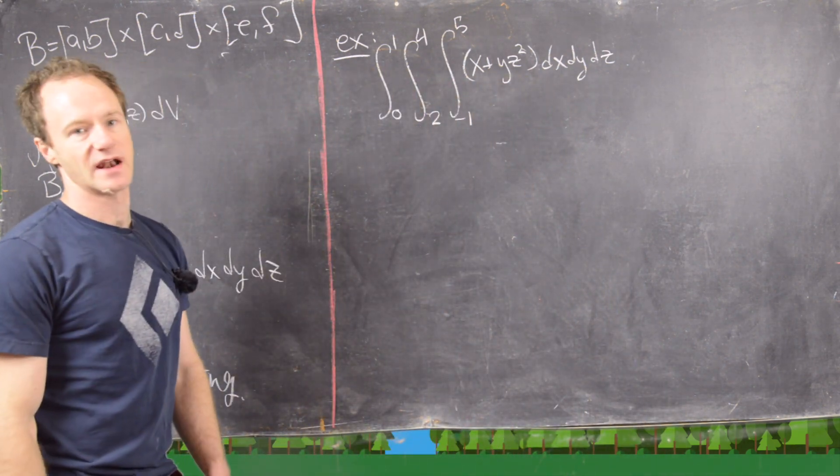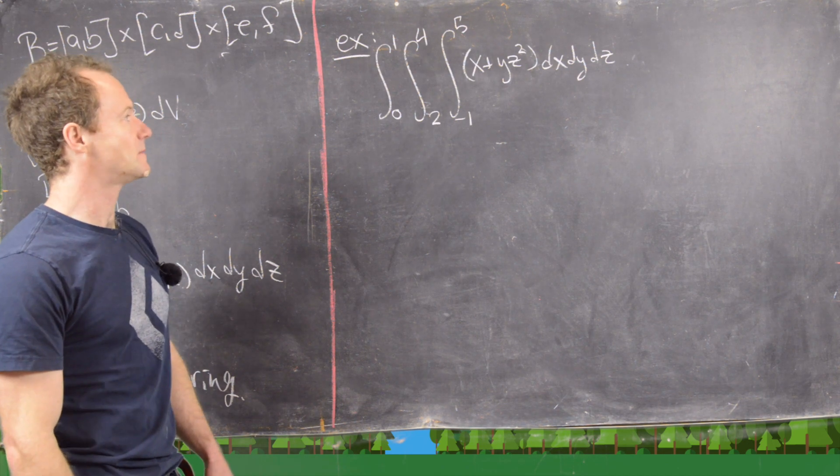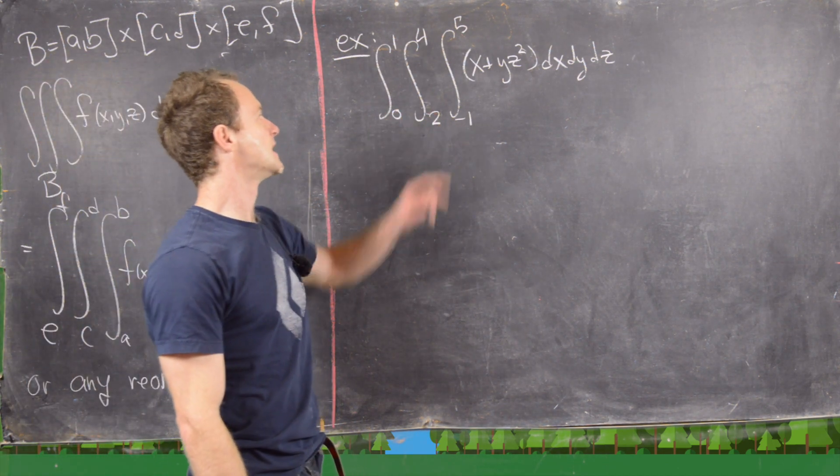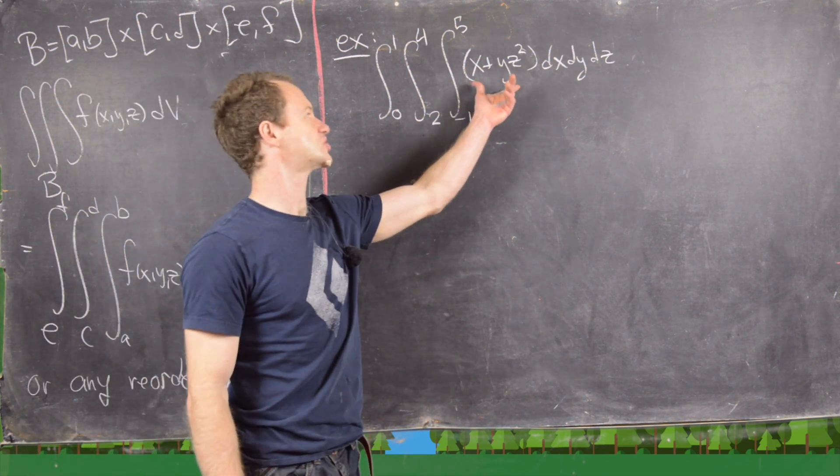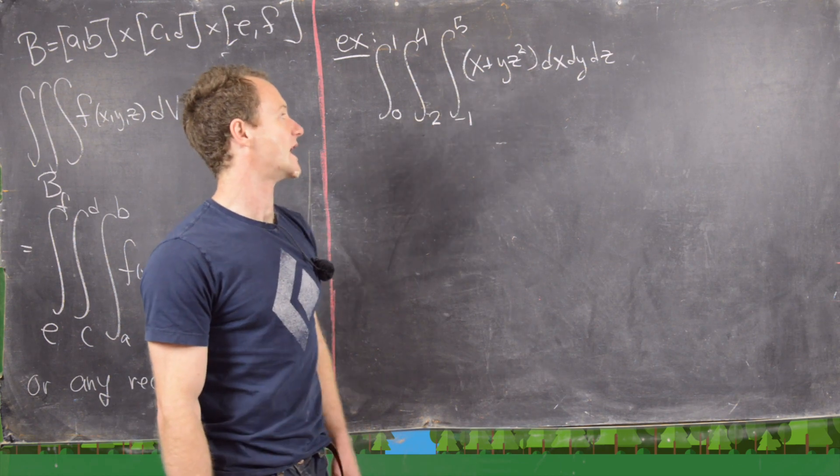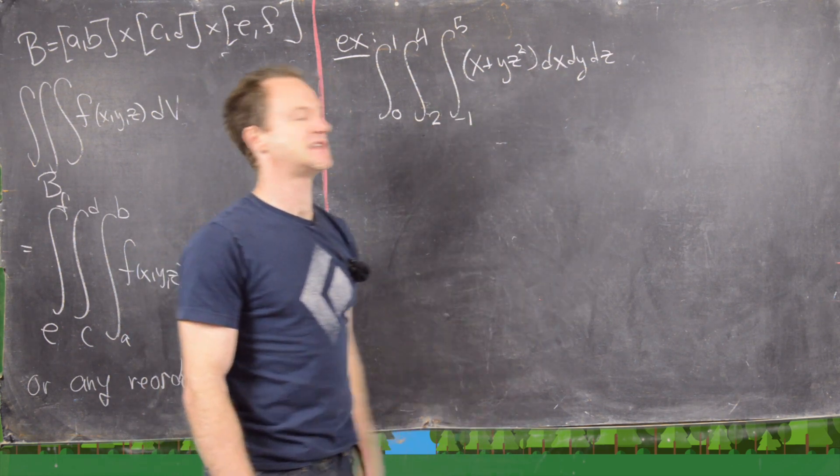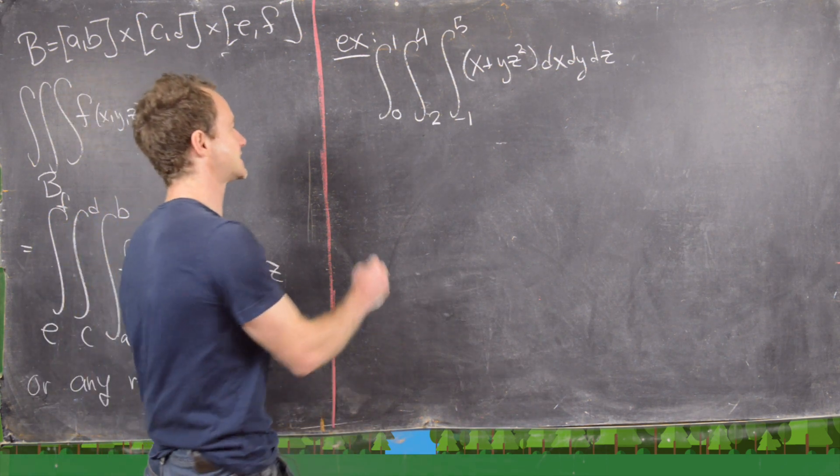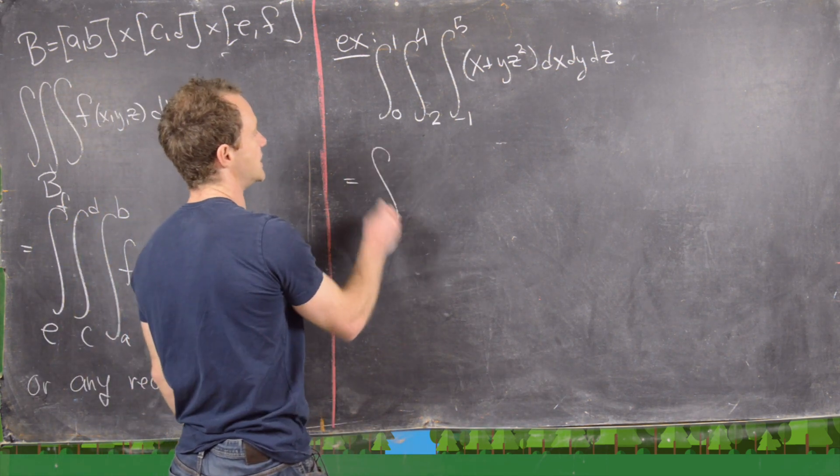So let's go ahead and look at a basic example. So we'll take this integral 0 to 1, 2 to 4, negative 1 to 5 of our function x plus y squared—sorry, x plus y, z squared—dx, dy, dz. So that means we need to take the integral with respect to x first. So let's go ahead and do that.